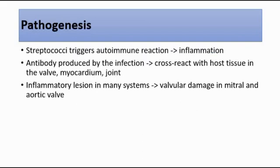For the pathogenesis of acute rheumatic fever, it is not direct infection from the bacteria to the heart. Actually, when there is a streptococcus infection, it triggers an autoimmune reaction in the body, causing inflammation at the valve tissue and also other places.